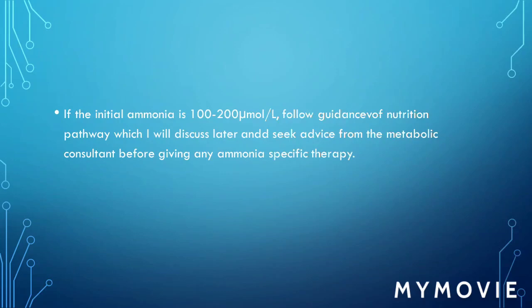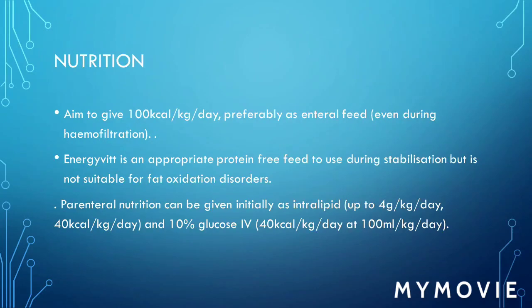Remember, avoid hyperventilation as alkalosis enhances ammonia toxicity. Similarly, avoid giving bicarbonate if pH is more than 7.2. Repeat plasma ammonia measurement every 3 hours. If ammonia has risen, intensive therapy such as haemofiltration will be required. If ammonia is the same or has fallen, continue with the same treatment and monitor 3-hourly.